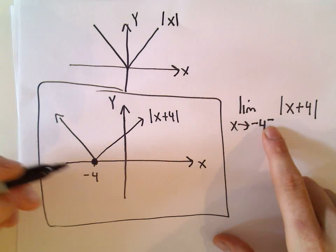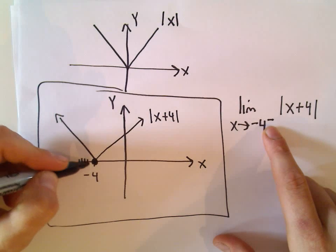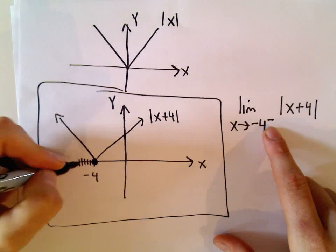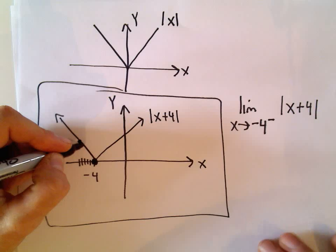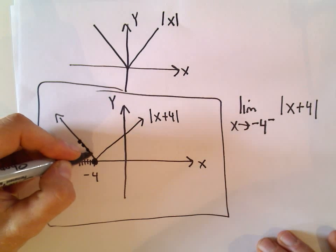since we're doing negative 4 from the left, we're taking numbers a little bit smaller than negative 4. We're thinking if we plug those into our function, what happens to the y values on the graph?